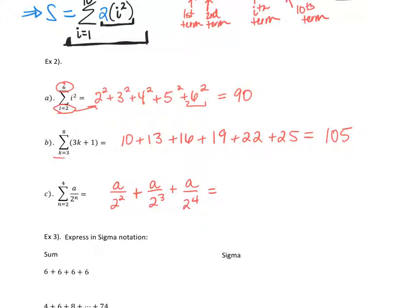For the second one, i starts at 3 and ends at 8, so there are 6 terms total. The first term is 3 times (3 plus 1), which is 10, and the last term is 8 times (3 plus 1), wait — 8 times 3 plus 1, which is 25.